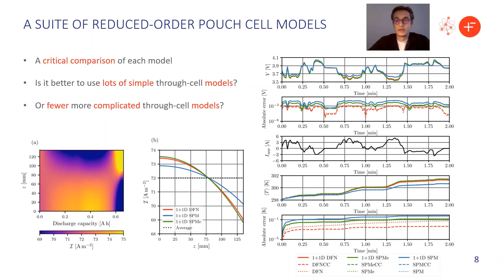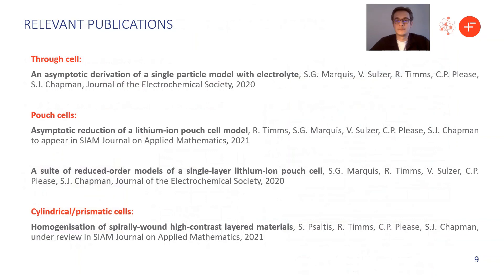In these papers, we tried to provide a critical comparison of each of the models in the original 3x3 grid that I showed a few slides ago. And what we really wanted to try and ask was, is it better to use a lot of simple through-cell models, or fewer more complicated through-cell models? So if I've got some fixed computational budget, how should I spend it? Do I want the most complicated electrochemical model, or do I want to use a lot of simple models? And we really compared how each of these different scenarios compared with one another in different operating conditions, and it really is application dependent. We try and give some guidance on which you should use depending on your application of interest.